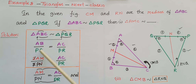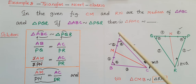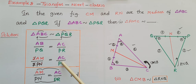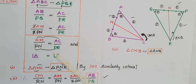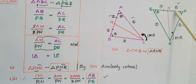CM is the median, and we know that the median divides the side into two equal parts. So AM is equal to BM, which means AB equals twice AM. Similarly, PQ equals twice PN. So we can write: twice AM by twice PN equals AC by PR. Cancelling the 2, we get AM by PN equals AC by PR. Also, angle A equals angle P, because in similar triangles corresponding angles are equal.